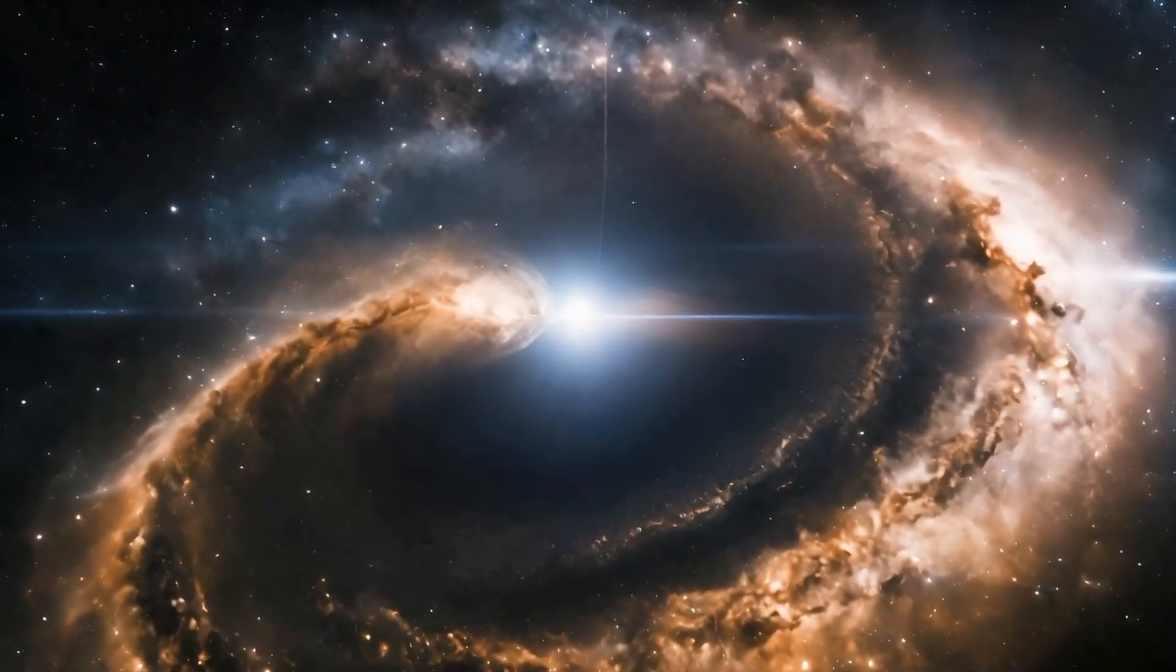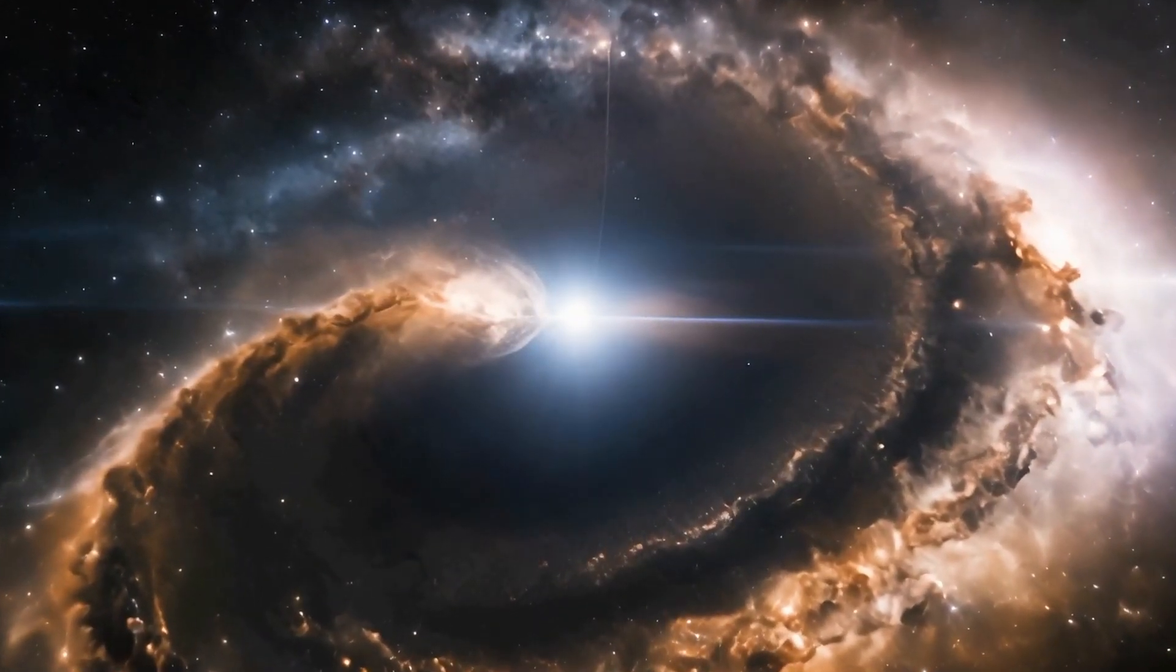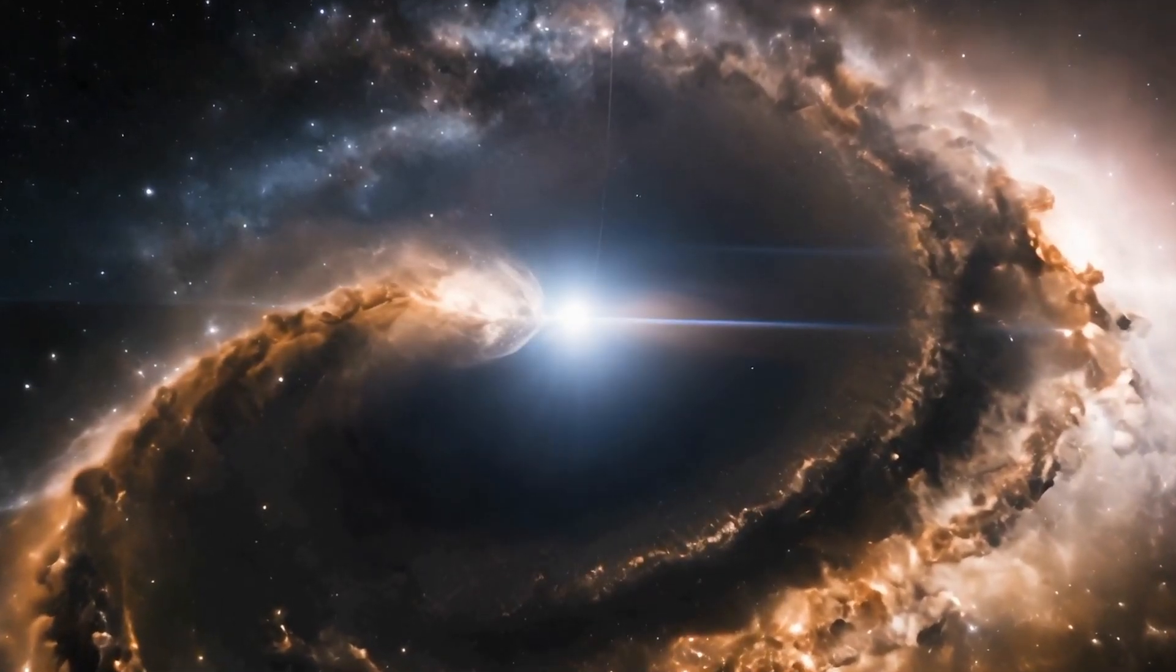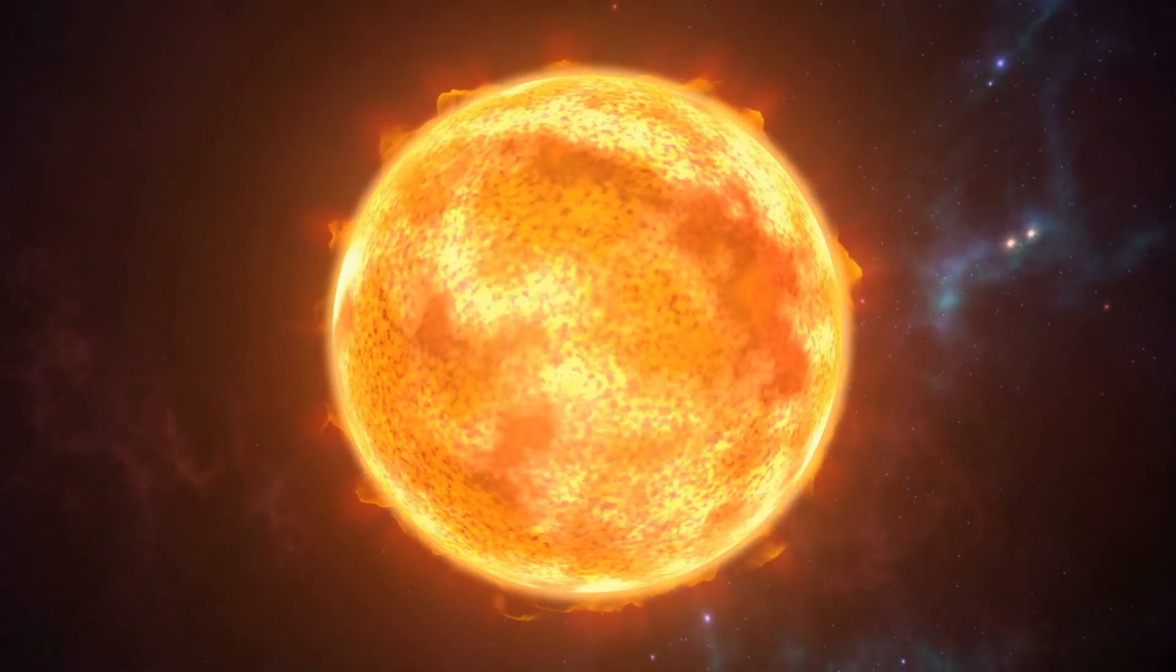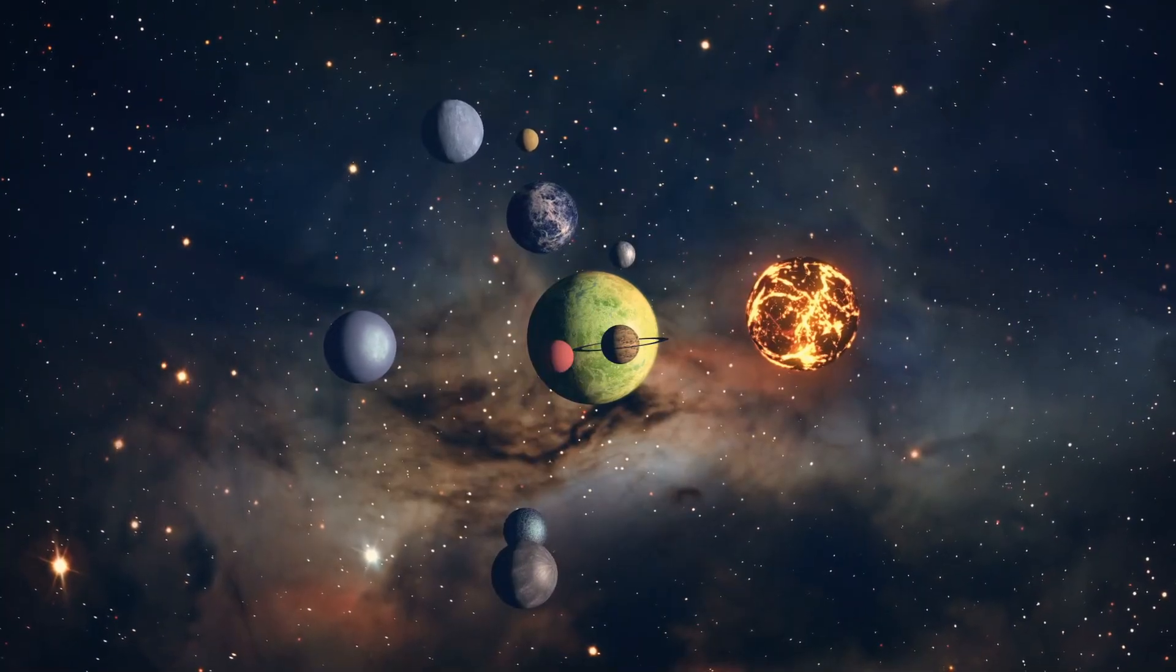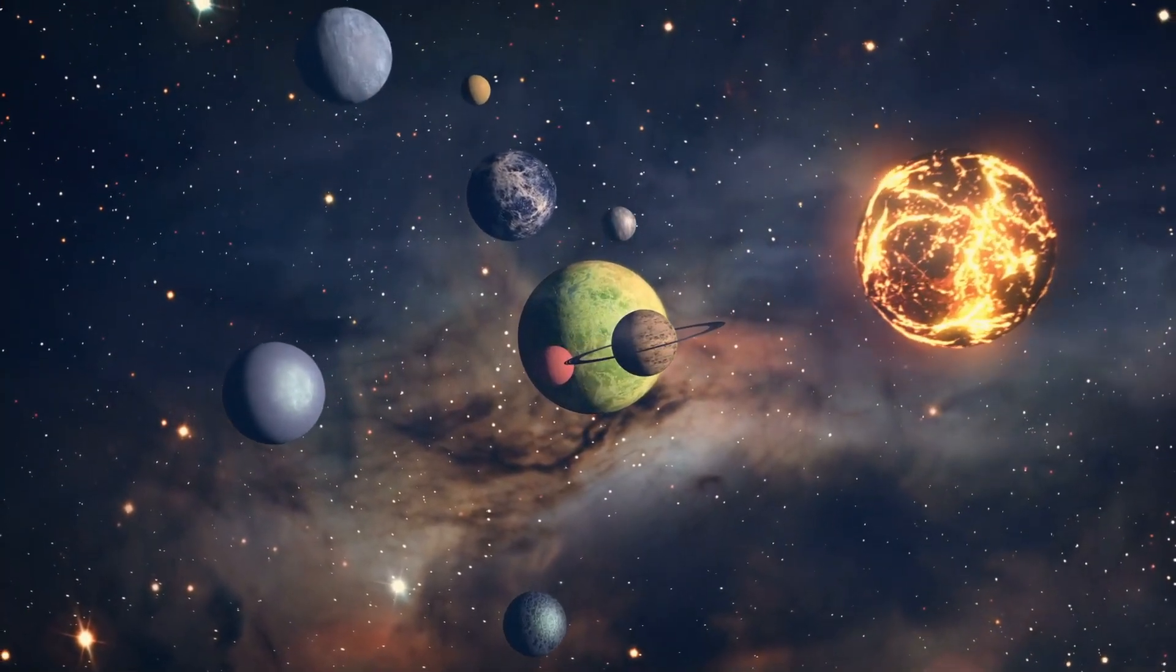During this process, the star will expand, its outer layers pushing outward against the gravitational force trying to pull them inward. If this were to occur with our Sun, its expansion could potentially engulf the inner planets, including Earth.